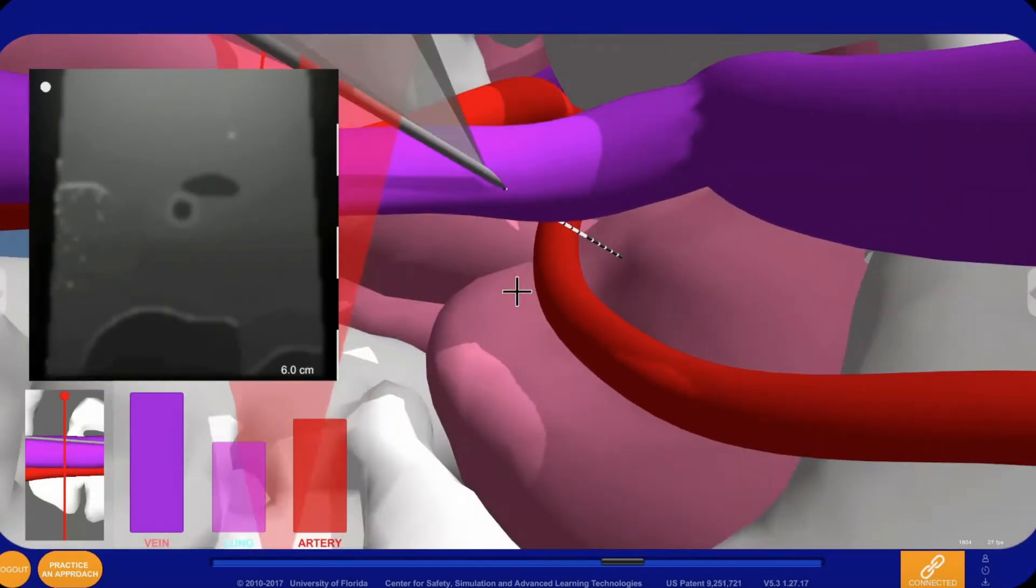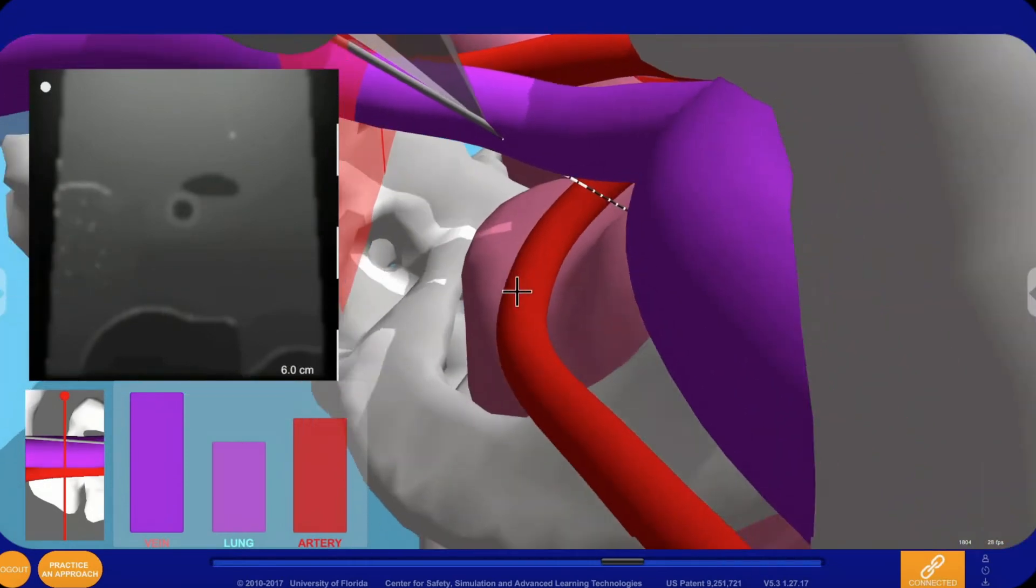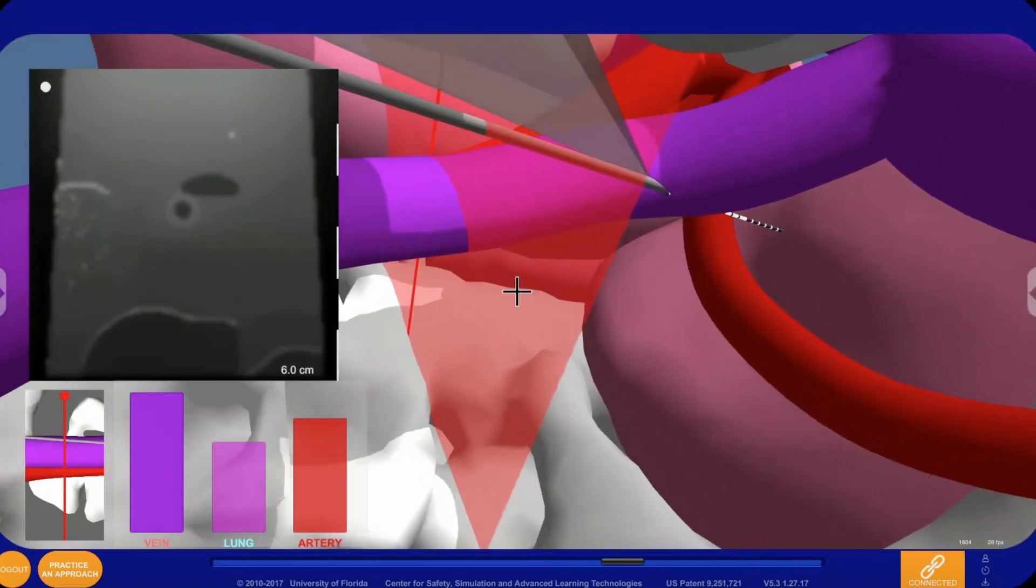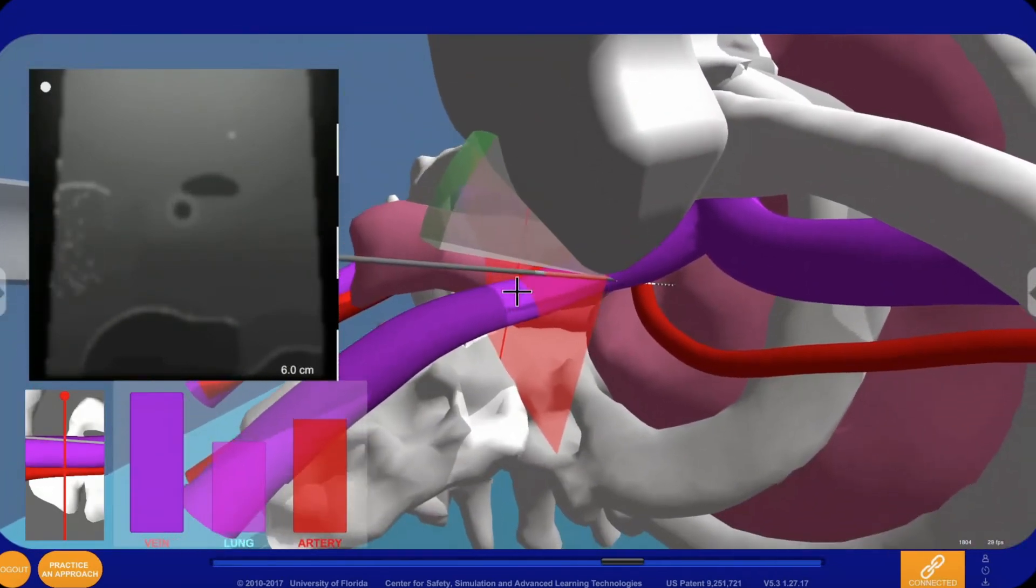When the needle is in plane with the ultrasound, the needle aligns with this red line. This aid is useful for troubleshooting ultrasound probe and needle alignment.